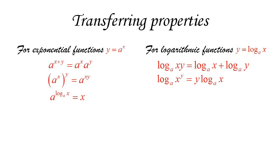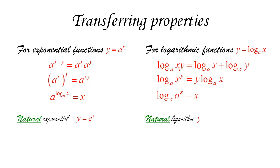We also saw that a to the log base a of x equals x, and correspondingly log base a of a to the x equals x. These cancellation properties are very important and are key reasons for using these inverse functions. We also have the natural exponential function — the basic one we use all the time — and correspondingly we have the natural logarithmic function, where the base is the number e.